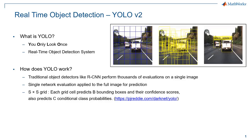It divides the input image into a grid, and each grid cell predicts a certain number of bounding boxes along with confidence scores for the boxes. The scores reflect how confident the model is that the box contains an object, and also how accurate it thinks the box is that it predicts. Each grid cell also predicts conditional class probabilities. I would suggest referring to a few papers and articles to understand the nuances of this unique approach, as it's not possible to cover all that in this short video.